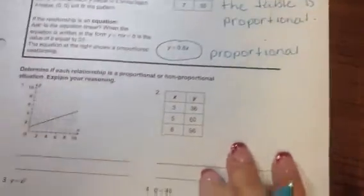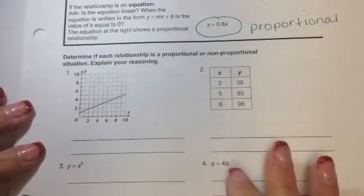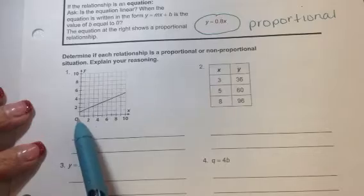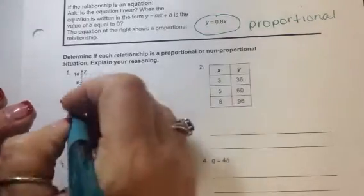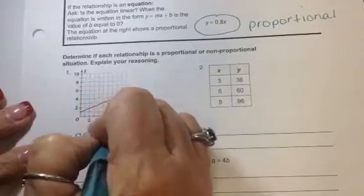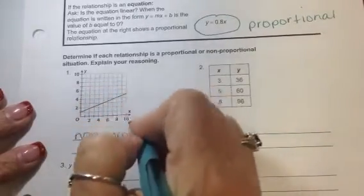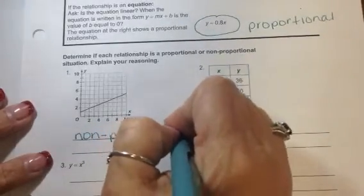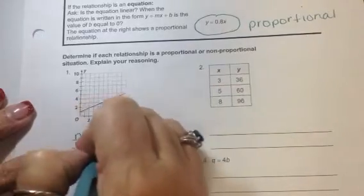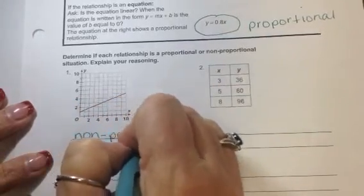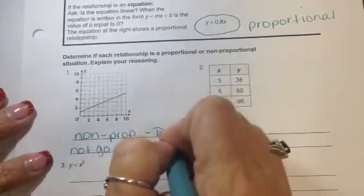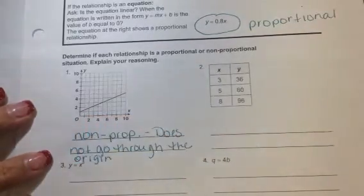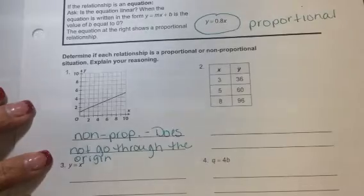We're going to look at a couple together. This one, easy, easy, easy. We're looking at it. I need to see if it goes through the origin. It's a straight line. But does it go through the origin at 0? No, it does not. So this one is non-proportional. And I'm going to write P-R-O-P for proportional. If you want to spell it out, you can. And the reason it's not proportional is because it does not go through the origin. I'm going to put origin down here. Okay? It doesn't go through the origin. It is not proportional.